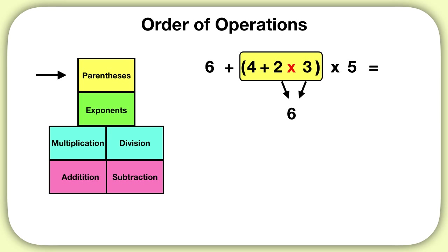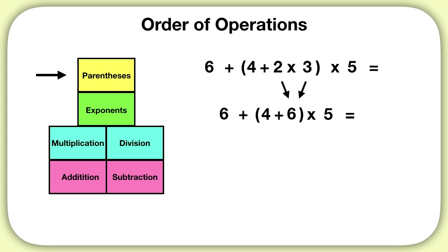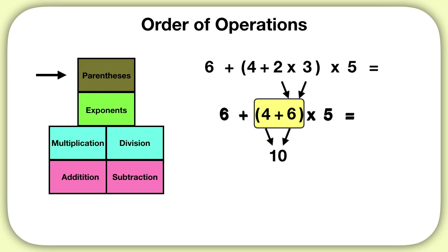Two times three is six, then we can bring down the rest of our equation. We still have the parentheses in this equation, so they get solved next. Four plus six is ten. Now there are no more parentheses, so we bring down our equation and keep solving.